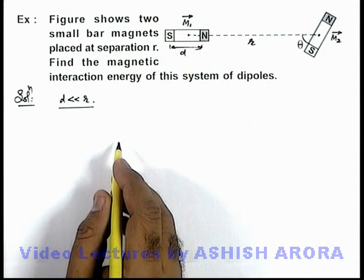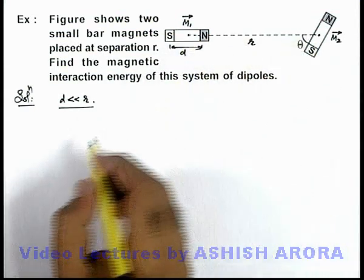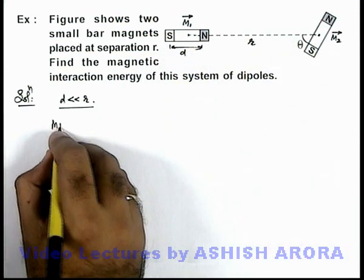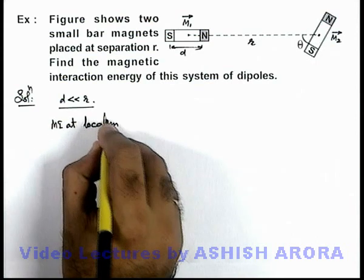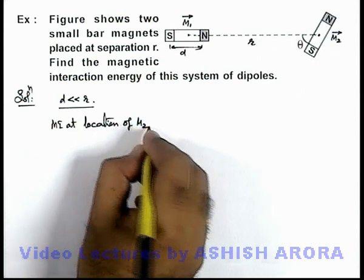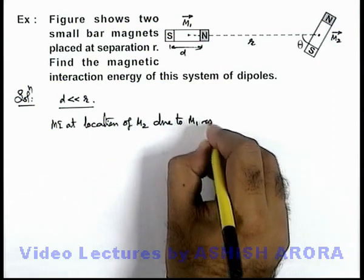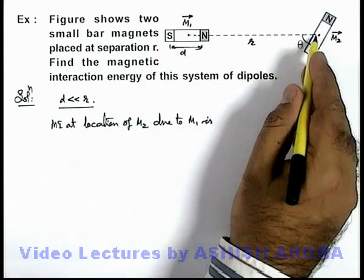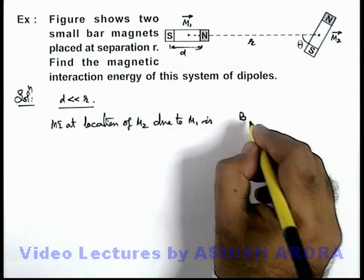Now, if we wish to find out the magnetic induction due to the first dipole at the location of the second, we can write magnetic induction at location of m2 due to m1.